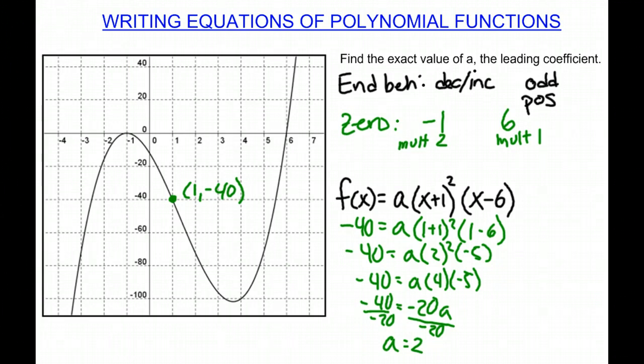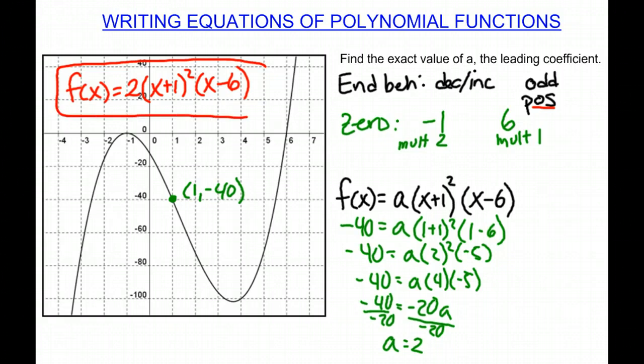So now I can rewrite my equation in its full form. I'll do f(x) equals 2, because we found that a, and if we look, it had to be positive, and it is. So that's great, 2 times x plus 1 squared times x minus 6. And that is my final equation for this graph.